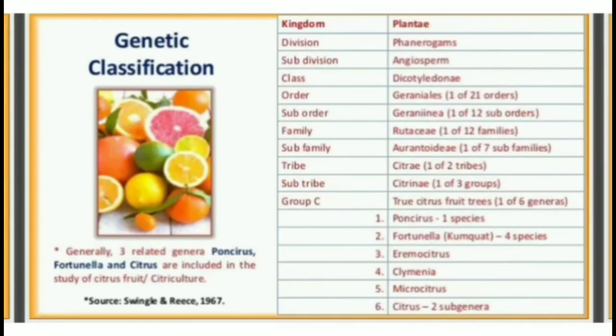Genetic Classification: Generally, three related genera — Poncella, Fortunilla and Citrus — are included in the study of citrus fruit or citriculture. Kingdom: Plantae; Division: Phenerogamae; Sub-division: Angiosperm; Class: Dicotyledone; Order: Geraniales; Suborder: Geraniineae; Family: Rutaceae; Subfamily: Aurantioideae; Sub-tribe: Citreae; Sub-tribe: Citrinae; Group C: true citrus fruit trees.